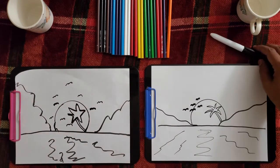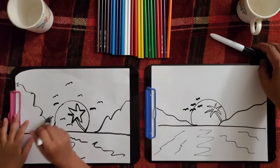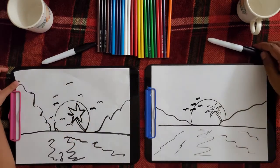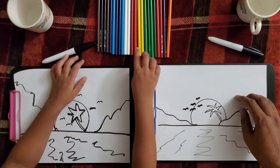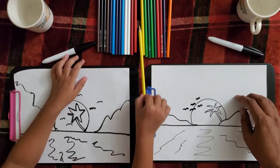Time to color. You can add some more trees. Now first, sun. One of us will pick yellow, and the other will pick orange.